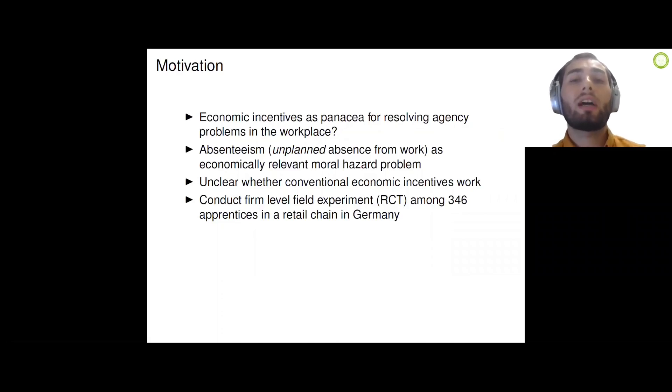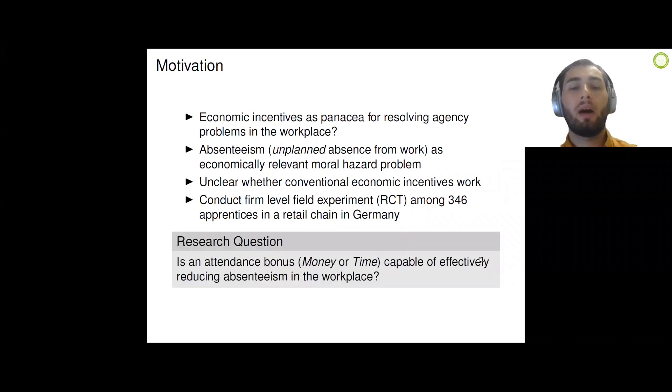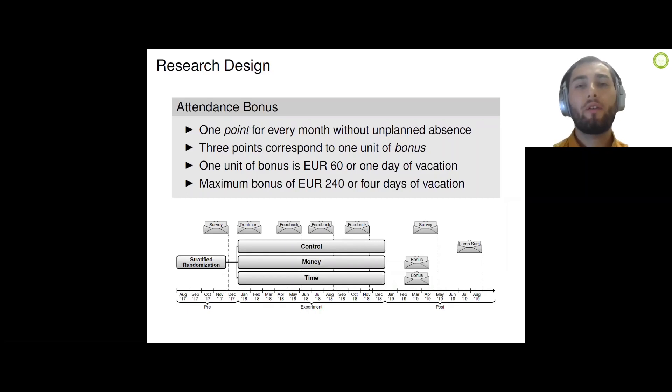For this purpose, we conduct a firm-level field experiment in collaboration with a retail chain. We introduce two variants of an attendance bonus among the apprentices who are trained to become retail salesmen. We distinguish between a conventional monetary bonus on the one hand and a novel time-off bonus in the form of additional days of vacation on the other hand. This guides us to our research question: is an attendance bonus, money or time, capable of effectively reducing absenteeism in the workplace? The design of the attendance bonus is simple and straightforward. For every month without a single day of absence, an apprentice gets a bonus point. After the end of the experimental period, these bonus points are then converted into actual bonuses. In the money treatment, a maximum of 240 euros can be attained, and in the time treatment, a maximum of four additional days of vacation can be attained.